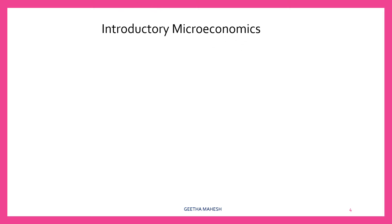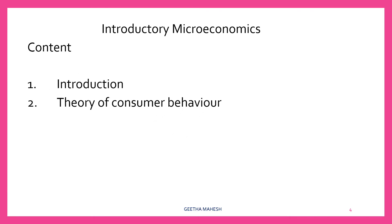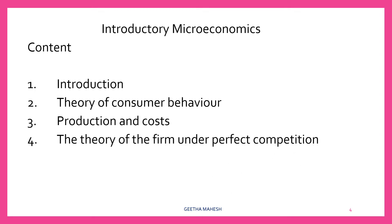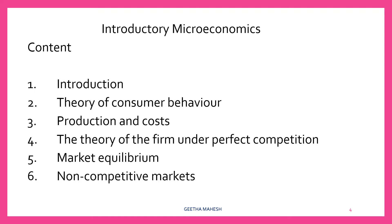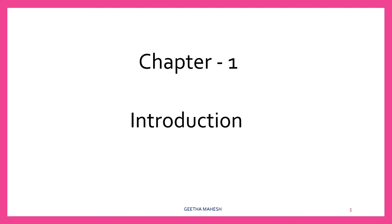Dear students, in microeconomics — that is introductory microeconomics — we are going to discuss six chapters. The first one is introduction. Second one is theory of consumer behavior. Third one is production and cost. Fourth one is the theory of the firm and perfect competition. Fifth is market equilibrium. Then, non-competitive markets. Let us discuss each and every concept in microeconomics according to chapters.